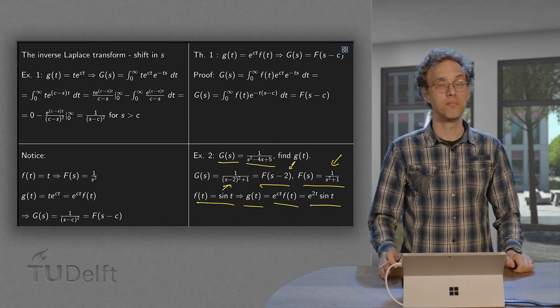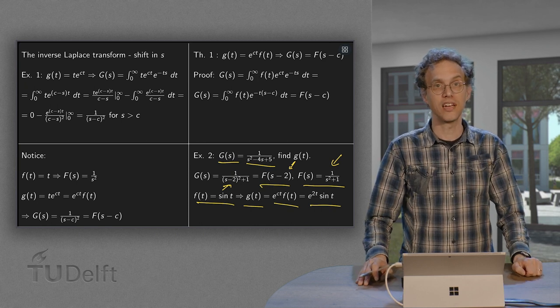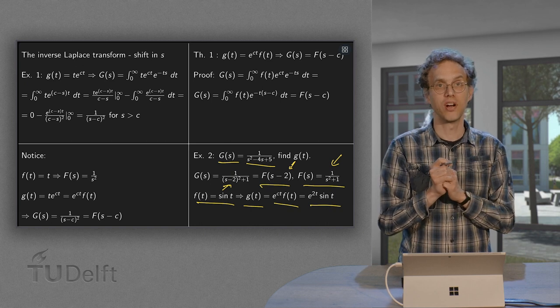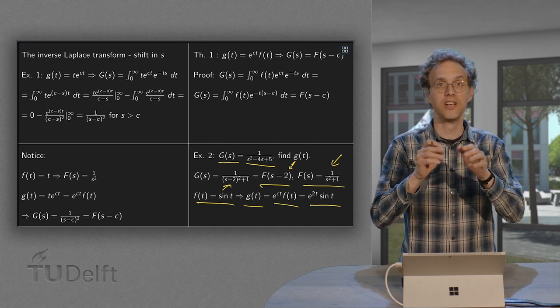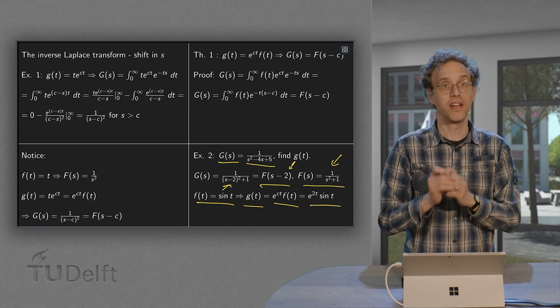So with this method, you can find a whole new set of inverse Laplace transforms if you are able to write your G(s) as a function of s-c, where the F(s) is in your table.